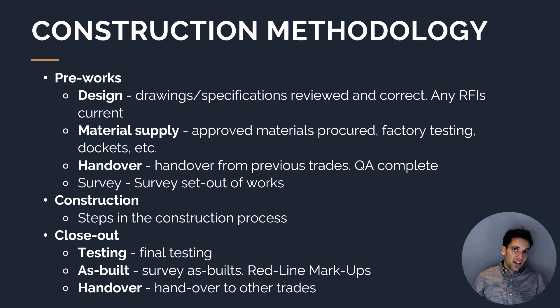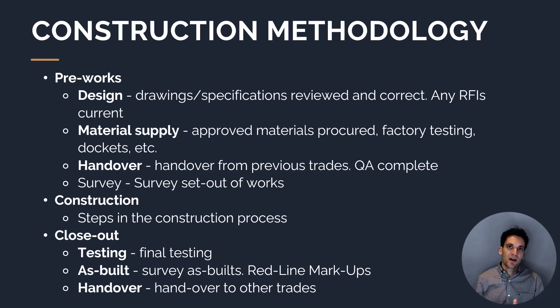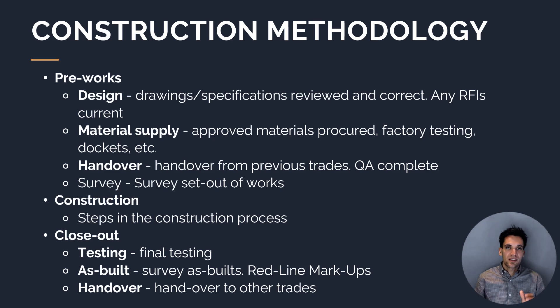For any construction activity, there's a lot of things that can be done incorrectly. So our job when writing the ITP is to come up with a list of all the things we need to check to ensure we're not going to make those mistakes. Each of these mistakes we could possibly make is going to relate to a step in the construction process — so the basis of our ITP is all the steps in the process we follow to deliver the works.